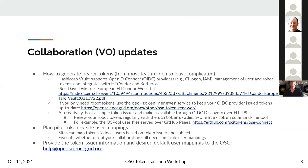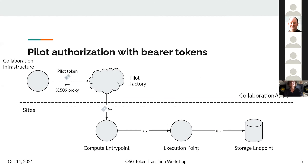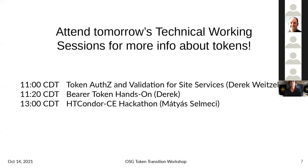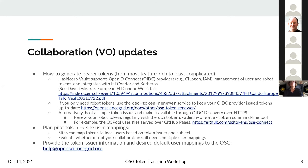If you manage a VO, what do you have to do for your token transition? Going back to the diagram where we discuss pilot authorization with bearer tokens, you're going to have to start generating pilot tokens. I've listed the options here from most feature-rich to least complicated setup. Dave Dykstra has been working hard on integrating HashiCorp Vault into a high-throughput computing setup.